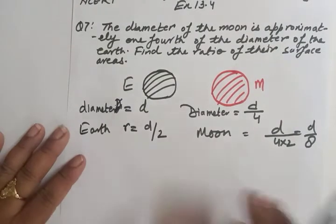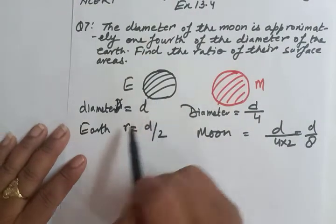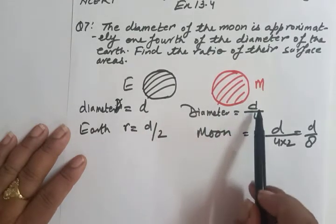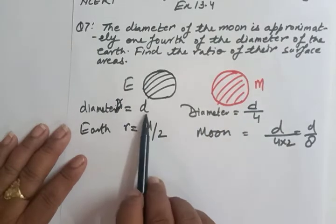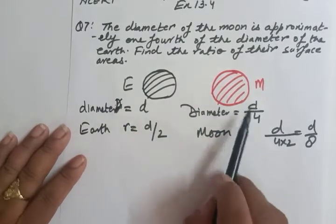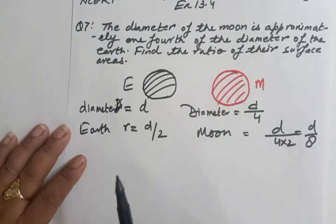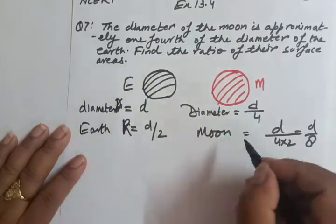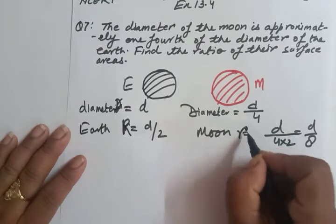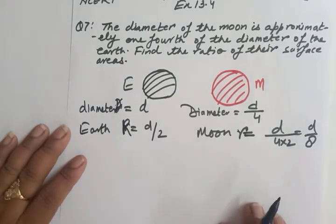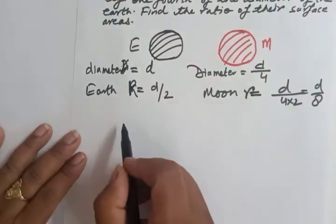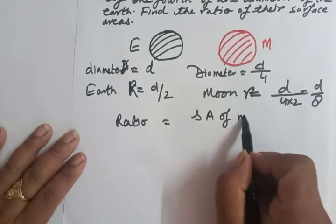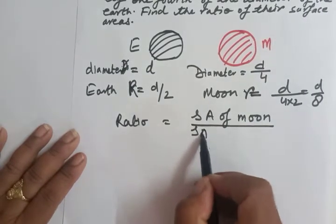For the surface area, the formula is 4πr² for a sphere, because both the earth and moon are spherical. The radius of the earth is d/2 (let's call it capital R), and the radius of the moon is d/8 (let's call it small r).